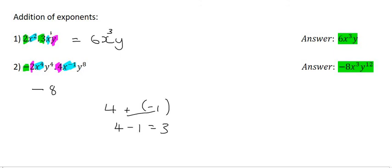If in doubt, you can even type it in on the calculator. You just type in 4 plus minus 1. And it will tell you that the answer is 3. And so it's going to be x to the power of 3. Now I'm going to use green again. See the y to the power of 4 and y to the power of 8. Well, you leave it as y. And what do you do with the exponents? You add. And so that's going to give us y to the power of 12.